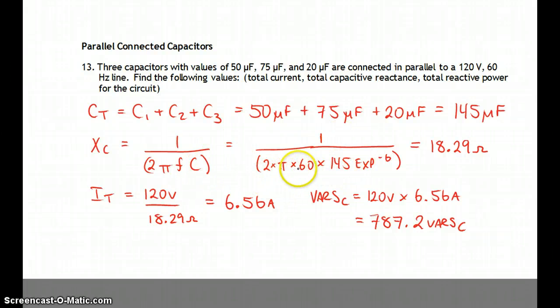Put that into this equation here. 2 times pi times 60 times 145 exponent or EE button, negative 6, and do the reciprocal of that. Gives you 18.29 ohms. And 120 volts divided by that reactance gives us 6.56 amps.